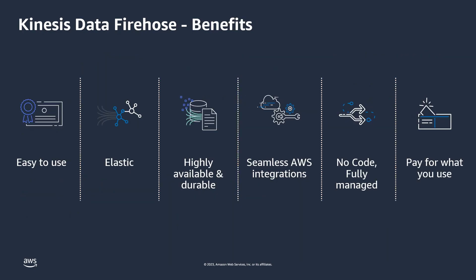Let's go over some of the benefits of using Kinesis Data Firehose. Creating a pipeline using Kinesis Data Firehose is easy. With just a few clicks, you can create a delivery stream, select your destination, and start streaming real-time data. With Kinesis Data Firehose, your delivery streams automatically scale up to handle gigabytes per second, maintaining data latency at levels you specify.